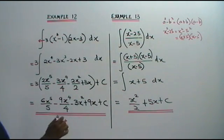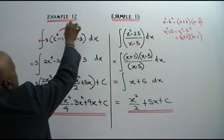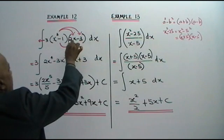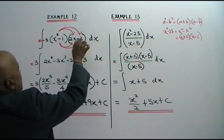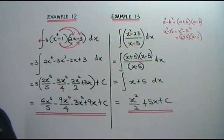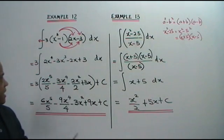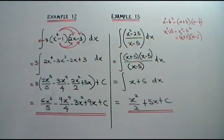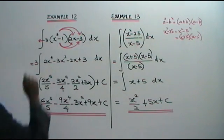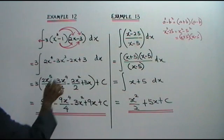Now we expand: x cubed times 2x, x cubed times negative 3, negative 1 times 2x, negative 1 times negative 3 — you get this expression, dx. Next step: we integrate. The x⁴ term: 4 plus 1 is 5, bring the 5 down.